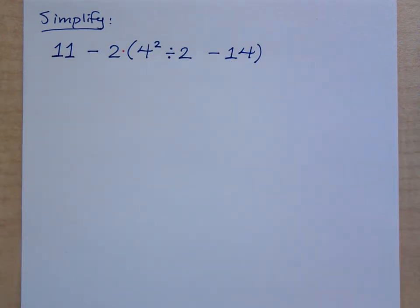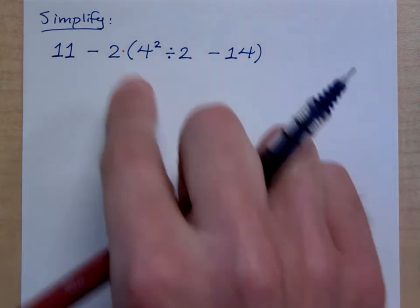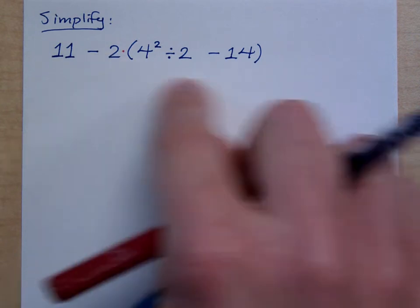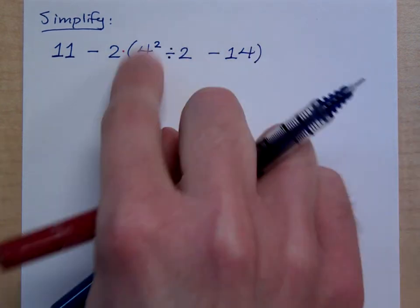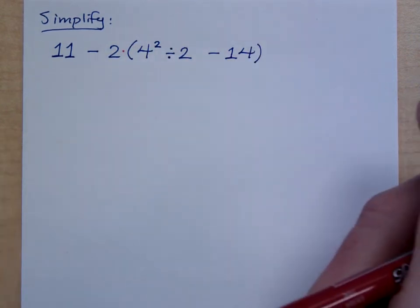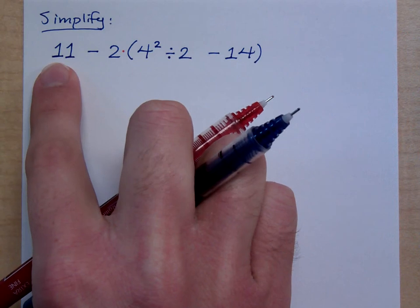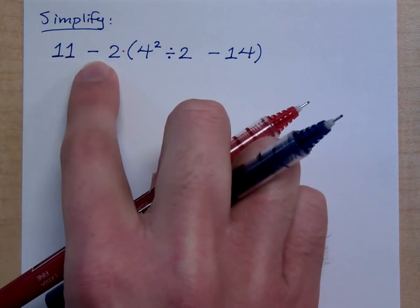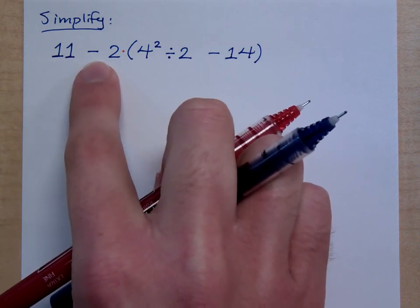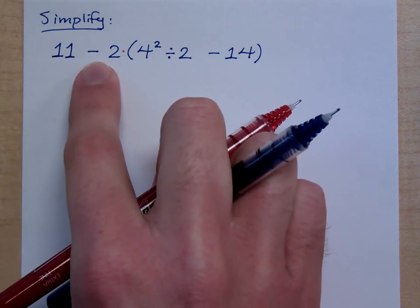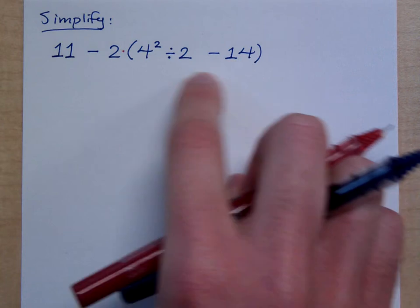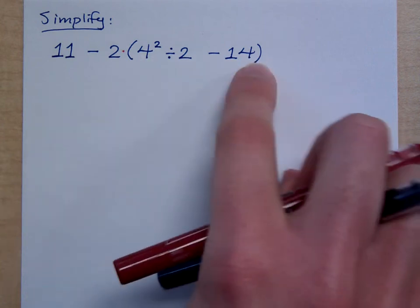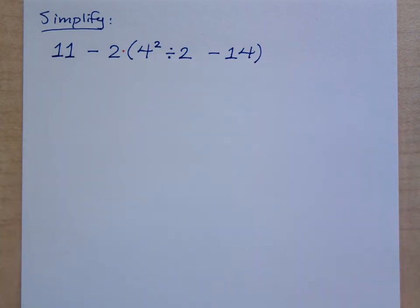We keep saying that multiplication is sticky — it's like glue. So 2 is connected to all of the stuff inside here, and the 11 is separate from that because of that minus sign. So, my focus is: what can I do inside the parentheses here?